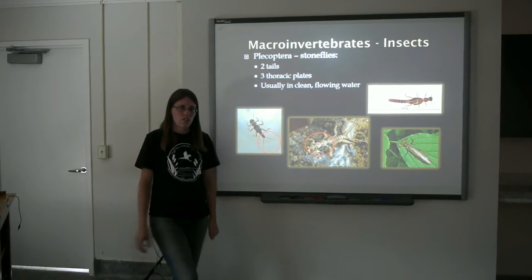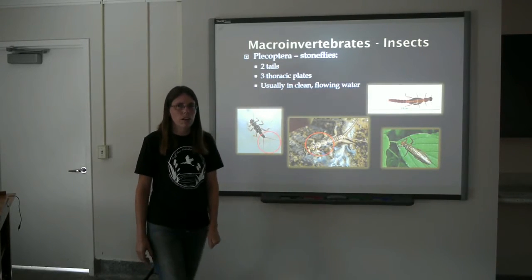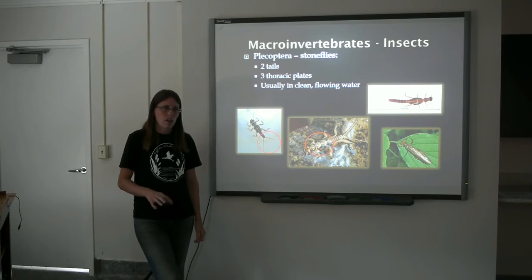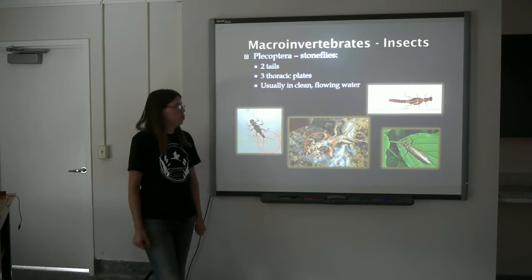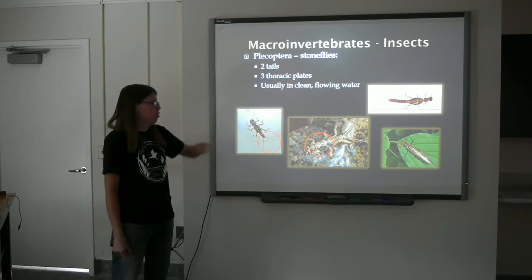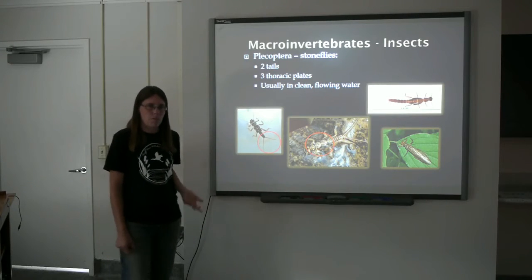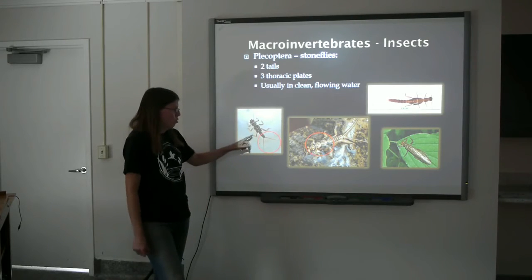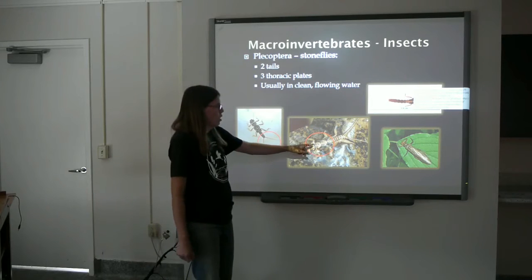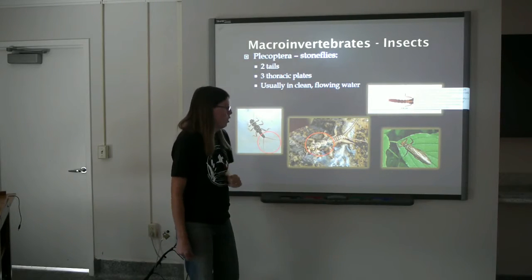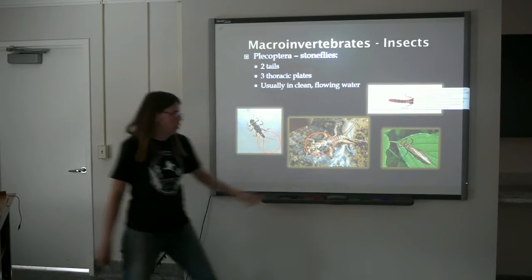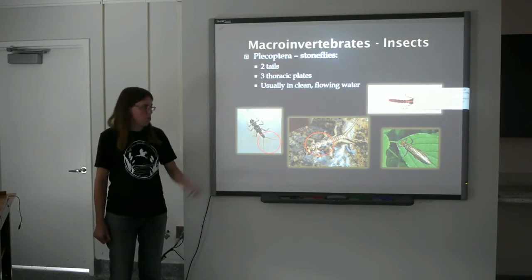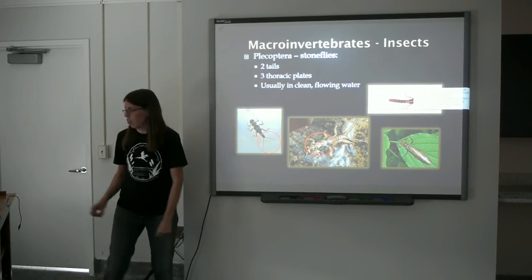Stoneflies are another sensitive species. We typically find stoneflies in fast-moving, well-oxygenated water with a gravelly or cobble substrate. The stoneflies will have two tail segments — the mayfly, remember, has three. Mayflies and stoneflies can look pretty similar. The stonefly will have two tail segments and three thoracic plates on the thorax. The adult stonefly is just a small moth-like creature. You'll see them on overhanging vegetation across the streams.